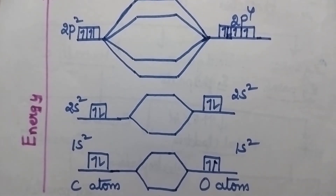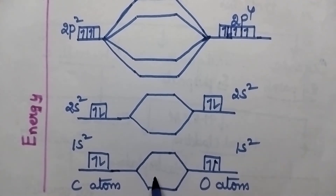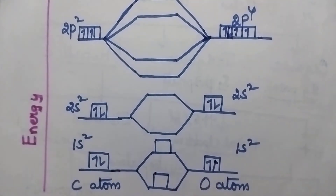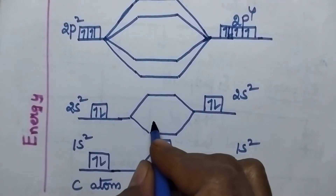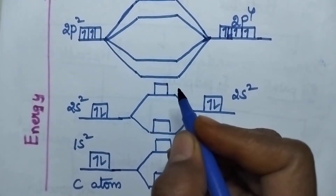Here the atomic orbitals of carbon and oxygen atom combine, which results in the formation of molecular orbitals. Initially, 1s atomic orbitals of carbon and oxygen atom combine and result in the formation of two molecular orbitals. Similarly, 2s atomic orbitals combine to form two molecular orbitals.